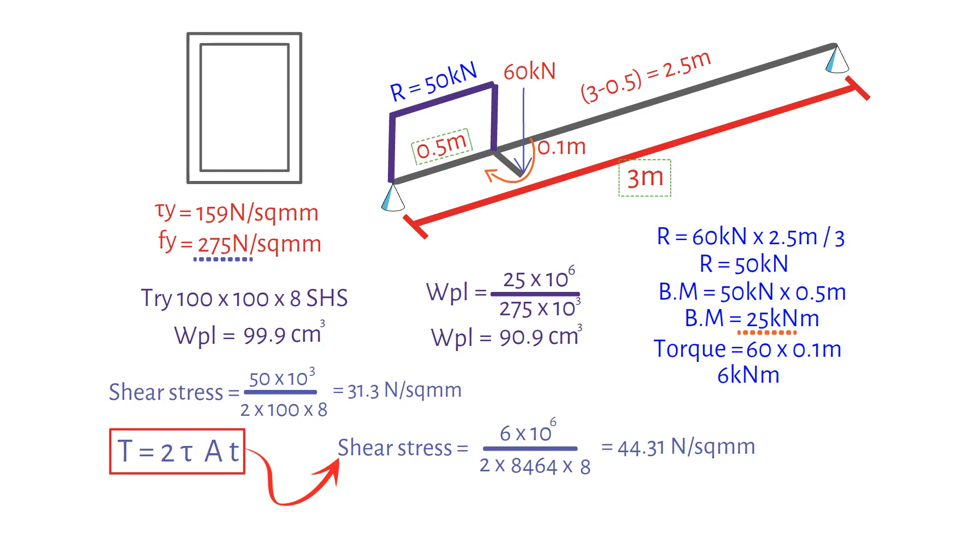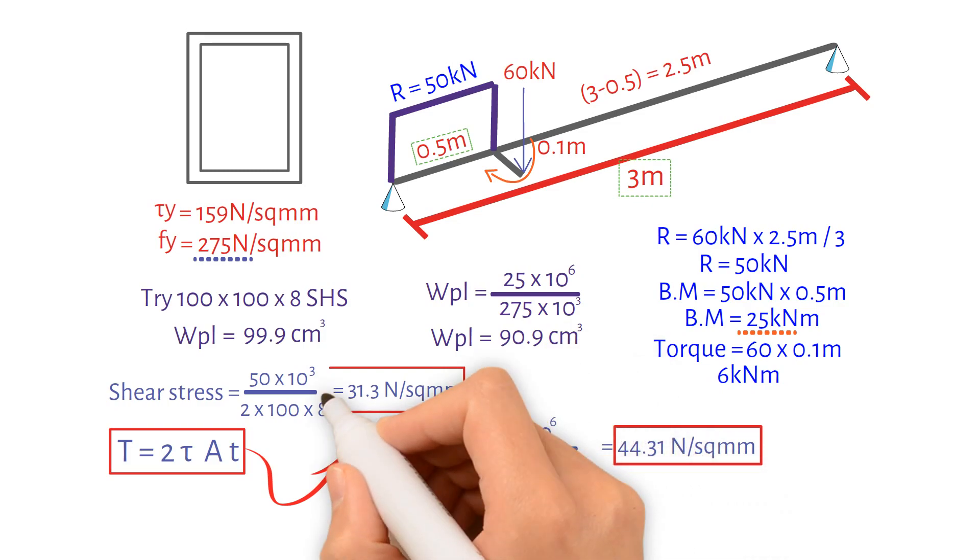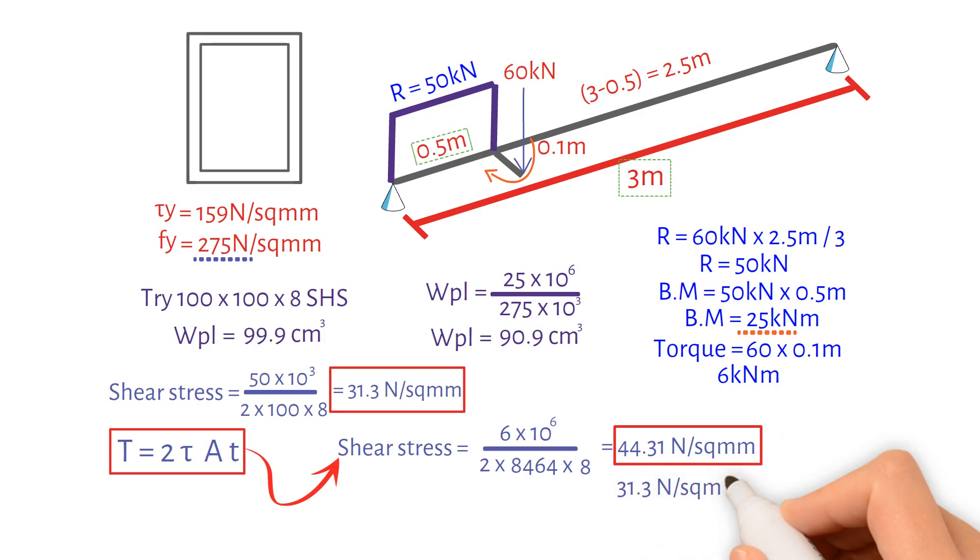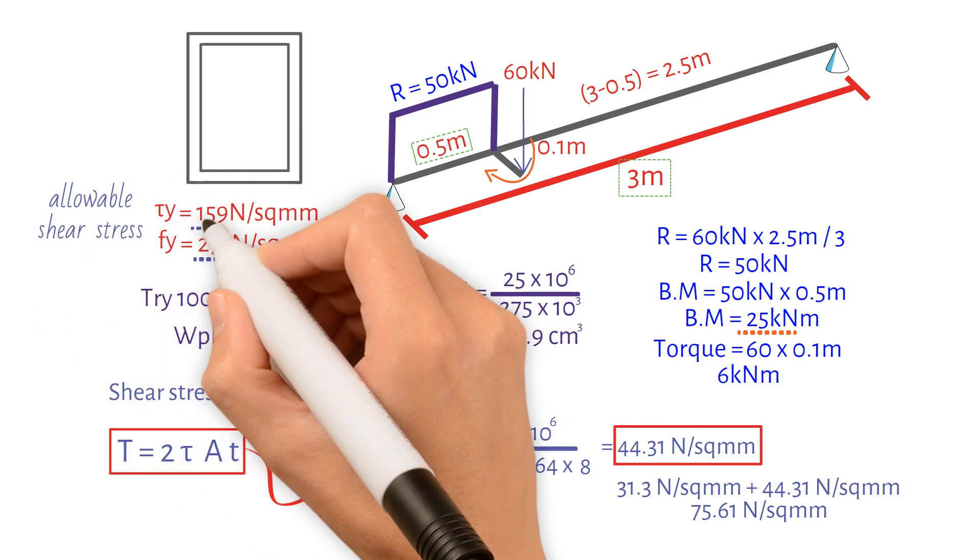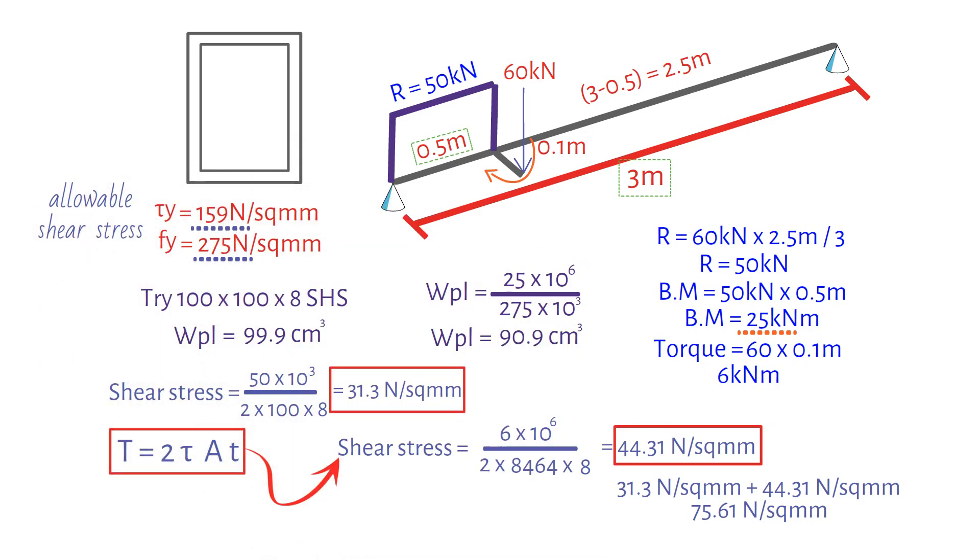We will add the torsional shear stress to the bending shear stress on one side of the section and subtract it from the other side. 31.3 plus 44.31 results in a maximum value of 75.61 N per square millimetre, which is less than the allowable shear stress of 159 N per square millimetre.